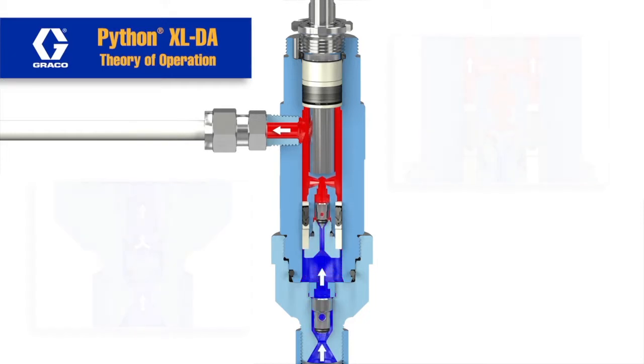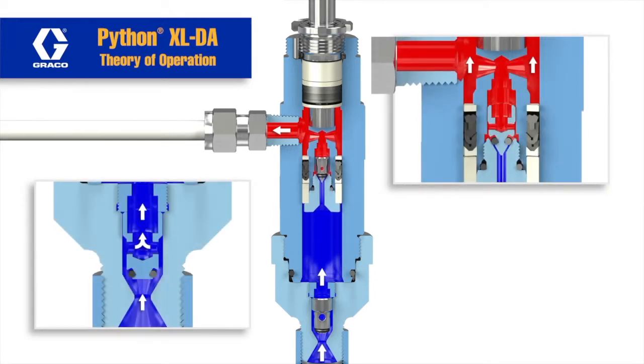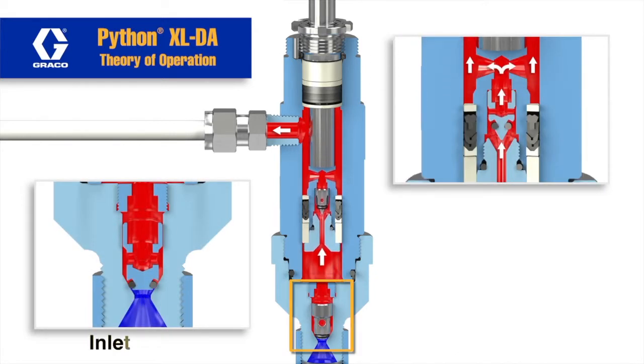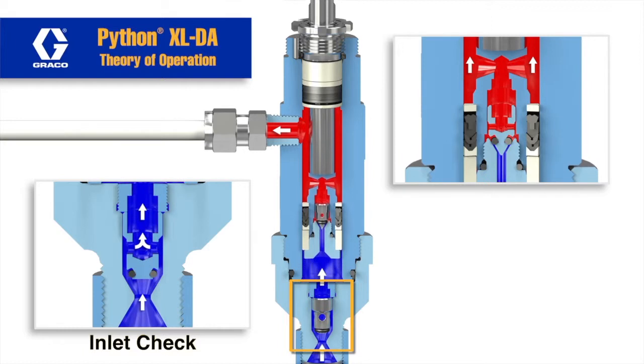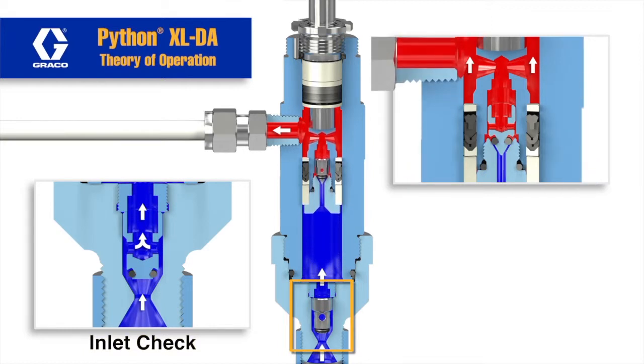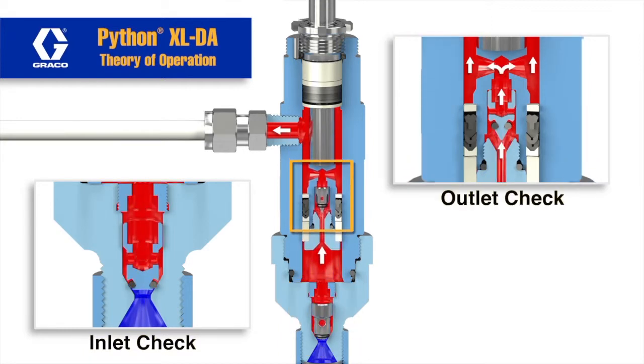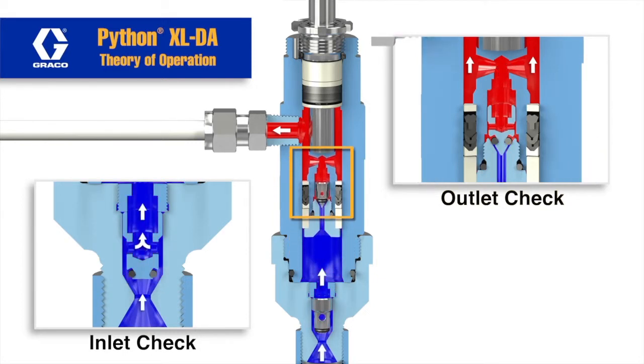First note how the inlet and outlet check valves are internal to the pump lower. The bottom check is the inlet where the fluid enters the pump fluid section, and the top check is the outlet where the fluid exits the pump fluid section.